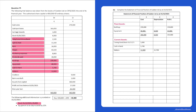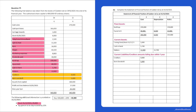Next up is Current Liabilities — money owed by the business falling due within one year. Be on the lookout for creditors or wages here. In this case we have creditors of €9,000 and a bank overdraft of €5,000. Adding these together gives us total current liabilities of €14,000 euro.